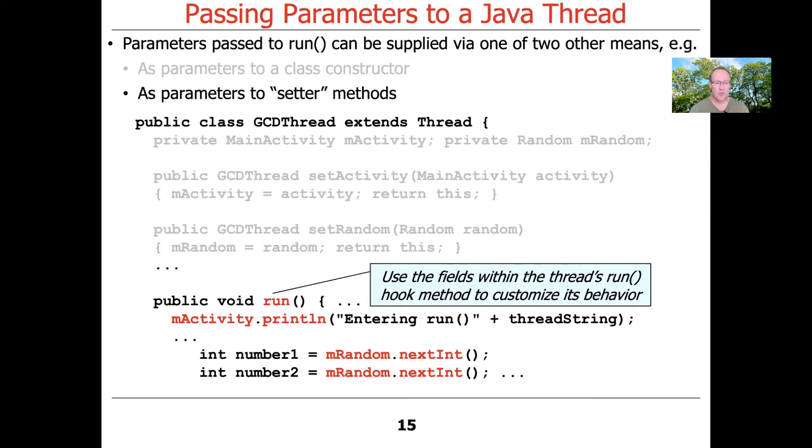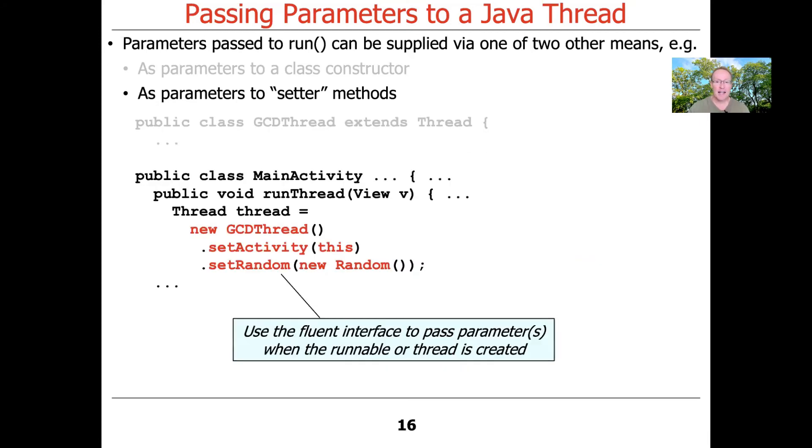You can see that we use mRandom to generate the next random integer for number one and number two, so we can compute the GCD and so on. And then here is the main activities run thread method.